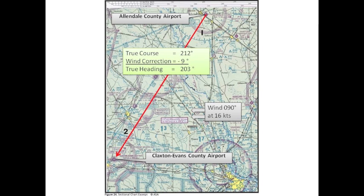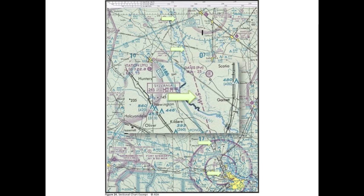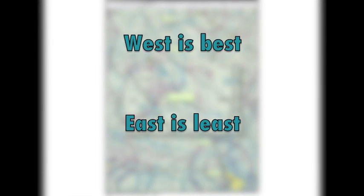The last step is to apply magnetic variation to your true heading. The isogonic line indicating magnetic variation is represented by the magenta dashed line running from top to bottom in figure 24. The magnetic variation for this geographical region is 5 degrees west. A good memory aid for applying magnetic variation goes like this: west is best, east is least.